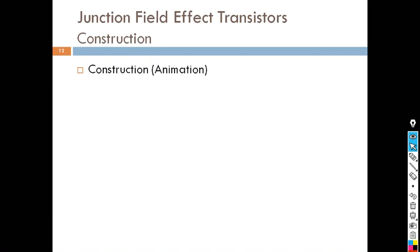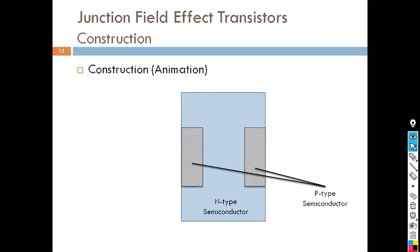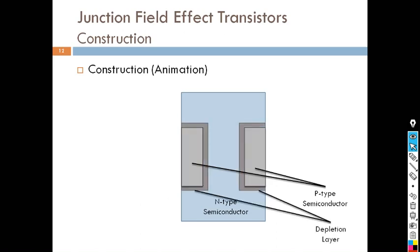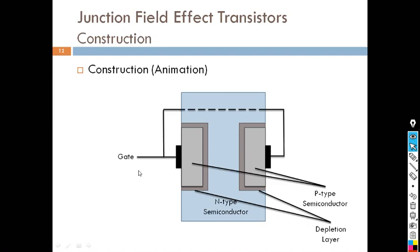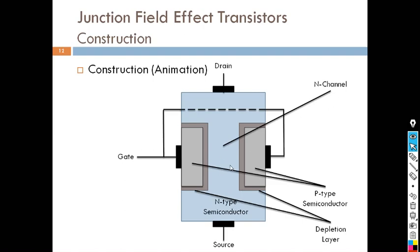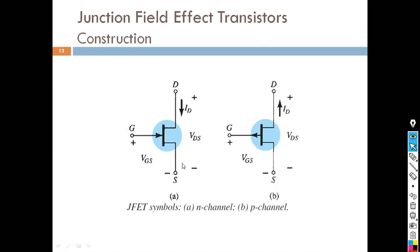Through animation, you can see N type semiconductor material over which P type semiconductor material is doped. In between the P type material there is a small region called the depletion layer. The P type semiconductor material is internally connected and referred to as the gate. The other ends of the N type material are connected through ohmic contacts — one is the drain and the other is the source. This is the channel where electrons flow.